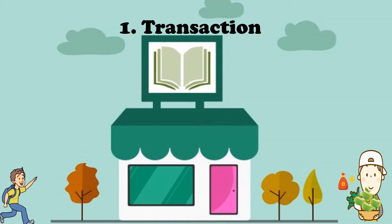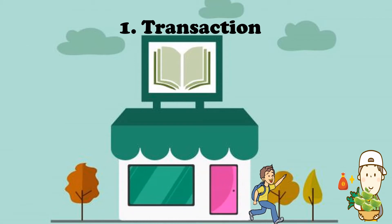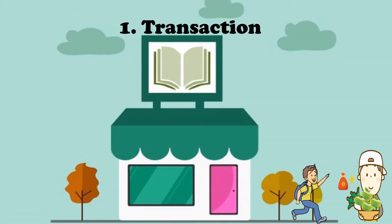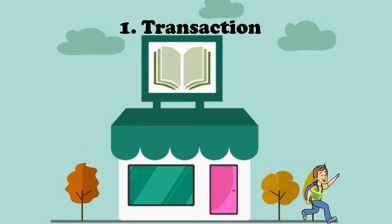With an example here: if we look at our customer, the customer is going to buy something from our seller. The seller is selling fruits. The customer buys an apple, receives the apple, and pays the money to the seller. That is a transaction.